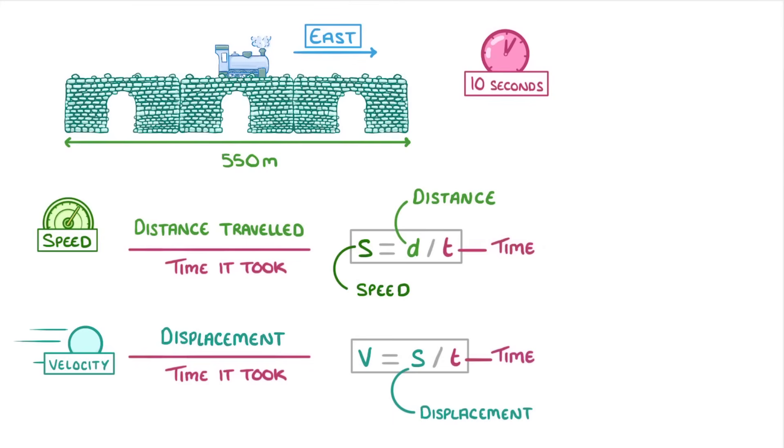In reality, people often use the velocity equation regardless of whether they've actually got a direction or not. The benefit of using velocity is that you can have a negative velocity to represent going backwards.